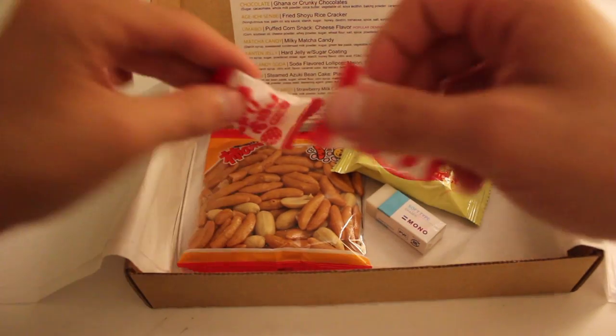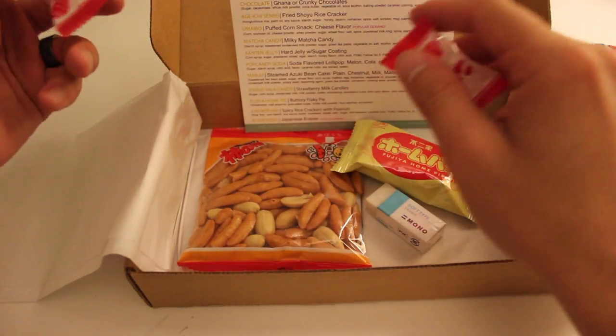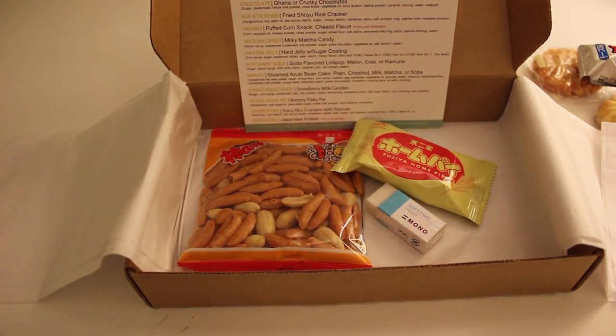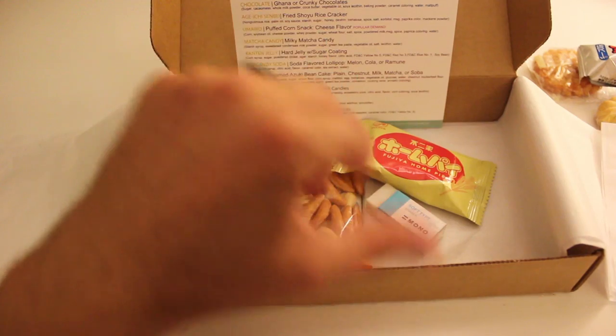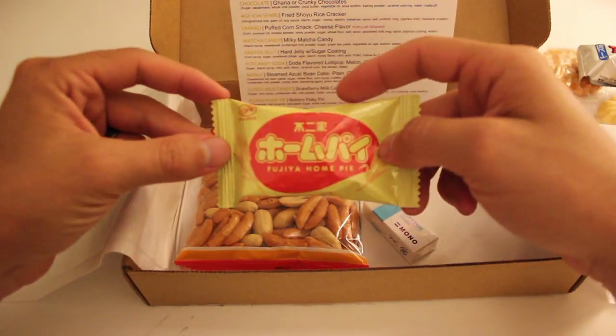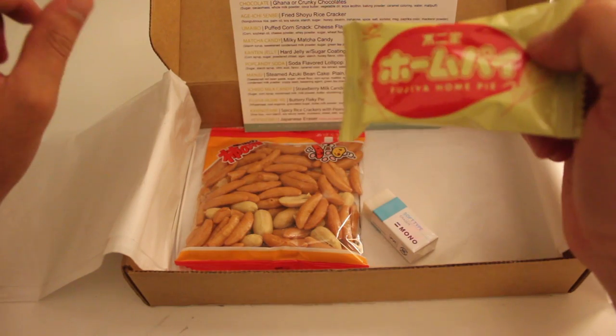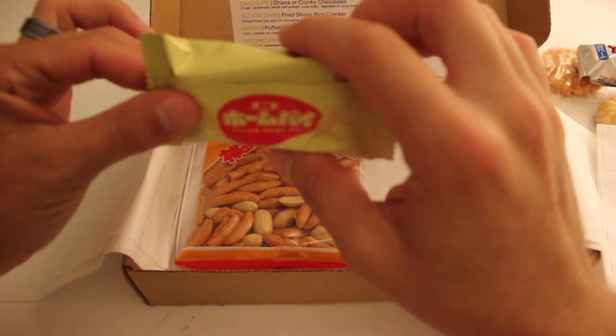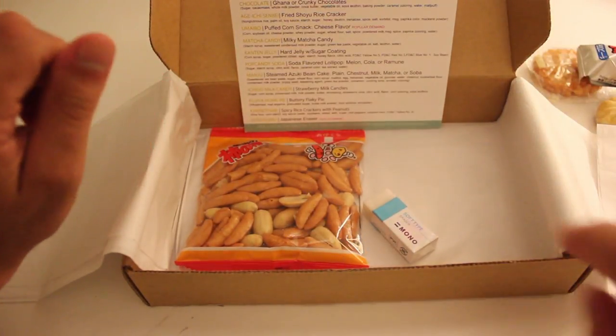And then these two must be the strawberry milk candies. Just a couple more things here. So we got this, which is Fujiya whole pie. Buttery flaky pie. Interesting. Can't say I've had anything like that before.